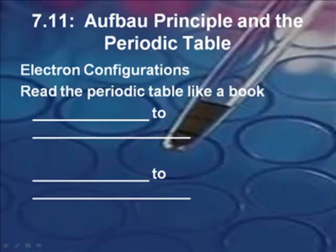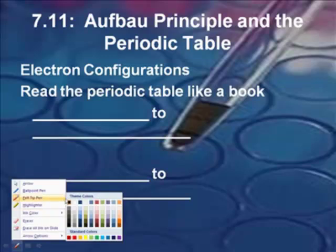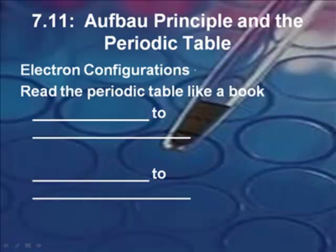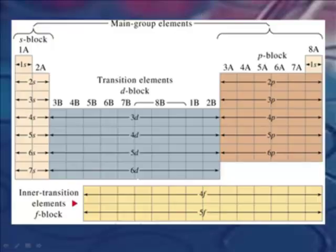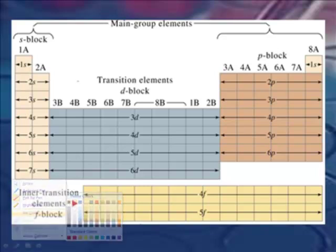Now that leads us to the Aufbau principle. What's that? That is the one where you fill the lowest energy first. Yeah, so there's a bunch of rules when we're trying to do things called electron configurations. What you do is you read the periodic table like a book, left to right, and top to bottom. The shape of the periodic table has to do with the electrons that are filled.